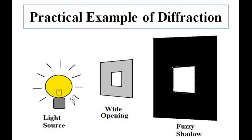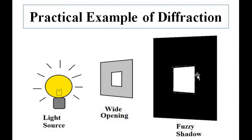Let us understand this with a simple demonstration. We have a light source, and then we have an obstruction in the form of a screen with a wide opening. Light passes through this opening, and around the edges of this opening there is bending of light. As a result, when the shadow is formed on a screen placed at some distance away, the edges of this shadow are not prominent — it's always a little bit blurry and fuzzy around the edges.